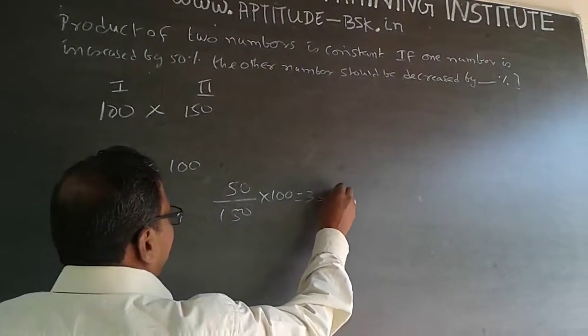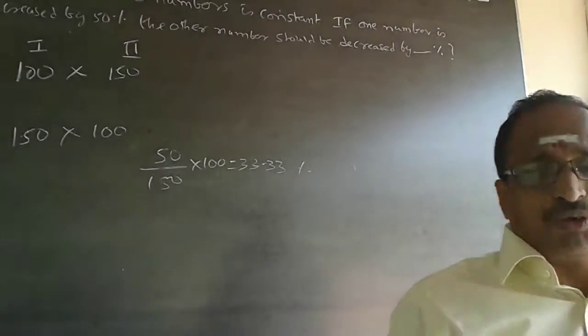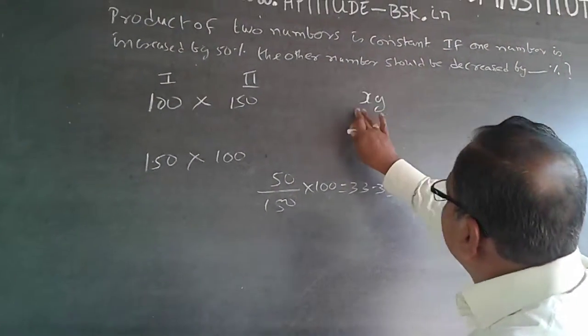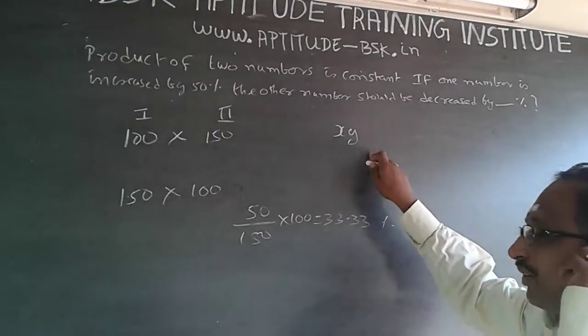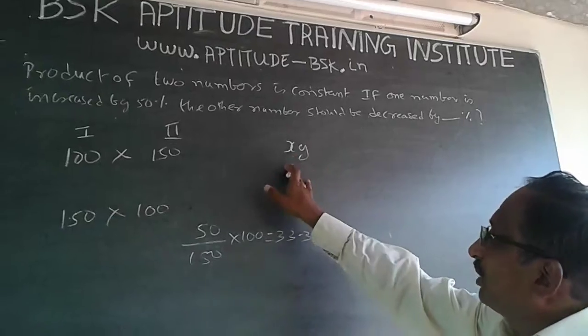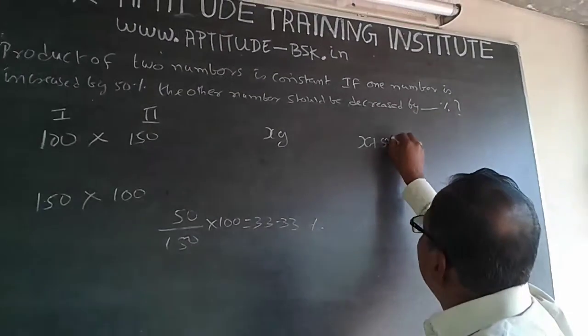The other way of doing it is using variables x and y. So the product is xy, and this has to be constant. The first number increased by 50% becomes x + 50/100 of x.